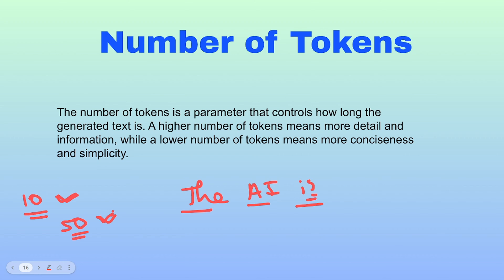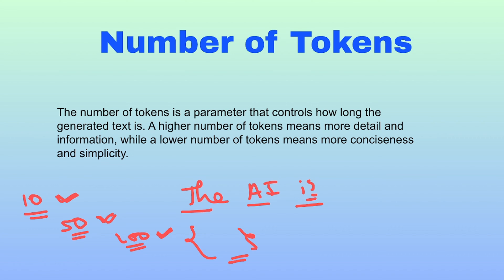If you increase the number of tokens, the same question about artificial intelligence would produce something like: 'it is a field of computer science that studies how to create machines and systems that can perform...' — more detailed and informative but also broader. If you set tokens to 100, you'll get a very large paragraph. So the number of tokens depends on the application — if you want a crisp answer use fewer tokens, but for a detailed answer use more.